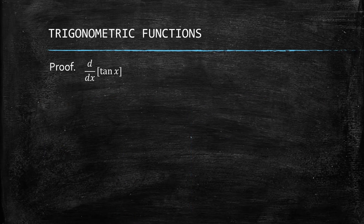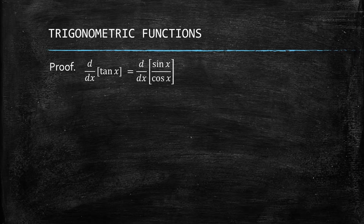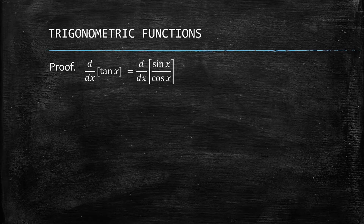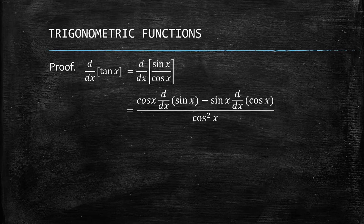Let's proceed to the proof of these two derivatives. For tangent, we take the derivative of tangent of x. We can apply the quotient identity of trigonometric functions: tangent equals sine x over cosine x. We use this to simplify our proof instead of using the limit definition, so it becomes a derivative of sine x over cosine x.